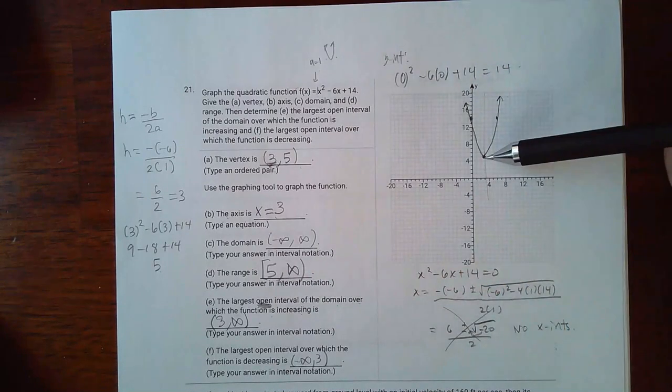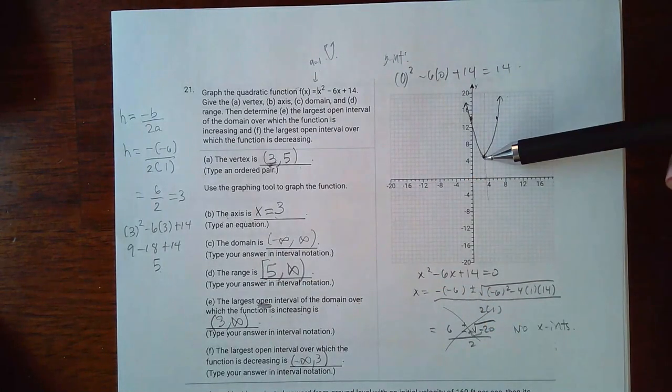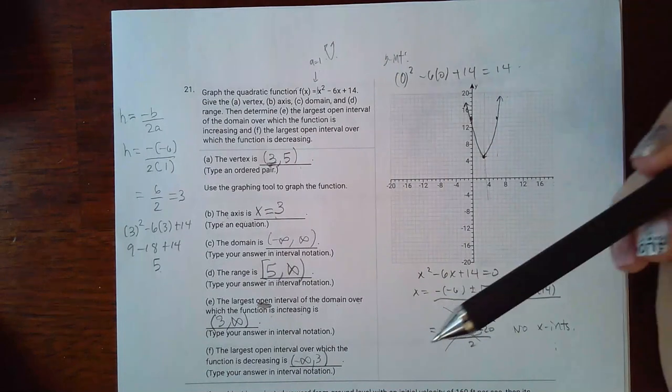The range though is from bottom to top. So the lowest it goes is a y value of 5 and the highest is positive infinity. Now when you're doing range you do need to use the brackets if there is a point there at the low spot and there is.